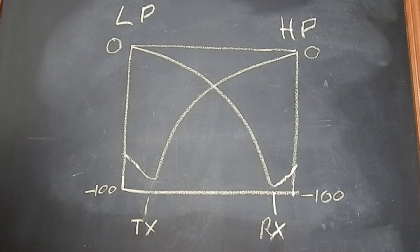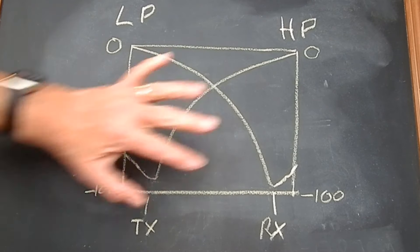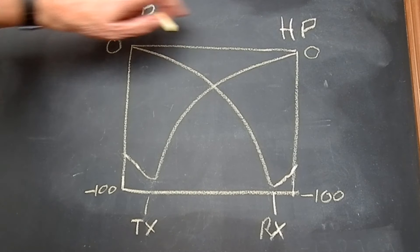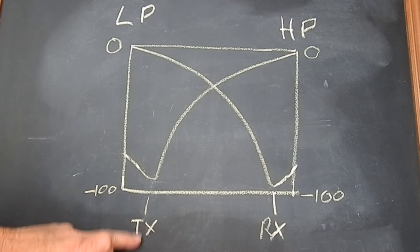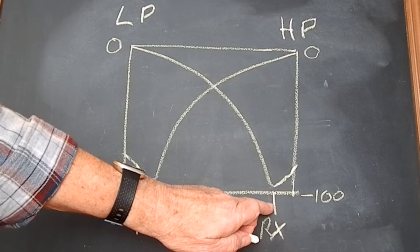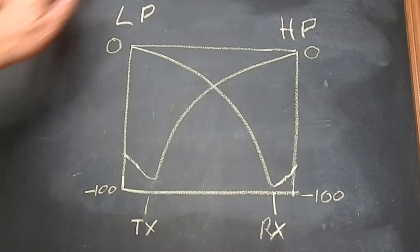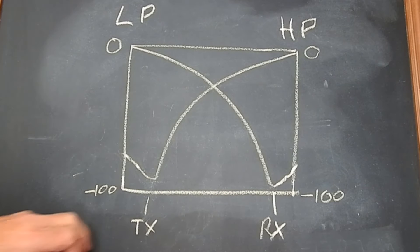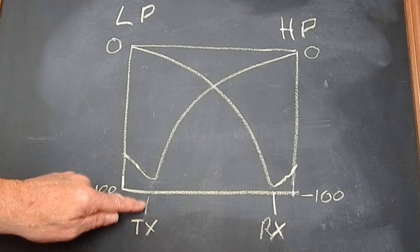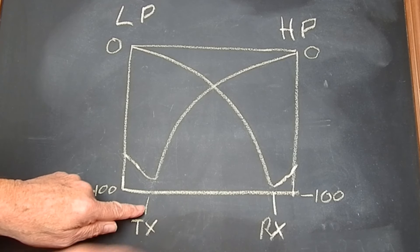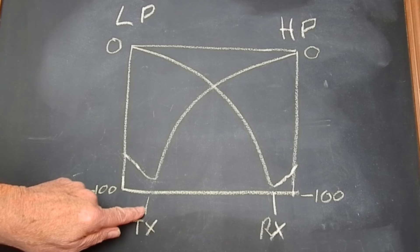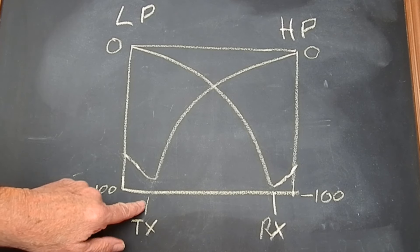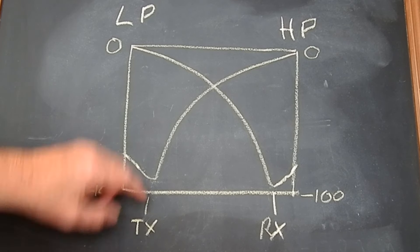If we were to look at this on a spectrum analyzer, this is what we'd see. This is the low pass side, the high pass. This is the transmitter frequency and this is the receiver frequency. This is the waveform you would see. So the transmitter frequency we don't want going into the receiver, so we're going to attenuate it.